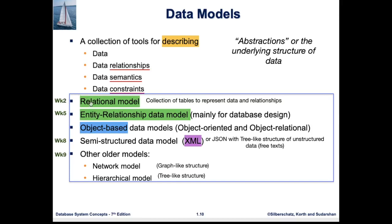In week 2, we will discuss the relational model, which is a type of database that looks like a table. It is a collection of tables to represent the data and the relationships — the relation here is the table. In week 5, we will cover the entity-relationship data model, which is mainly used for designing a database.